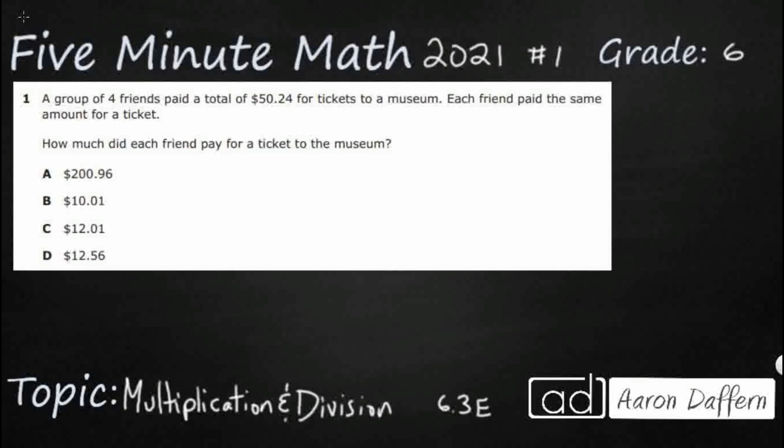So we had a group of four friends pay a total of $50.24. Each friend paid the same amount, so that's going to give us a clue. We've got equal groups or equal shares. We are looking at equal groups or equal shares.